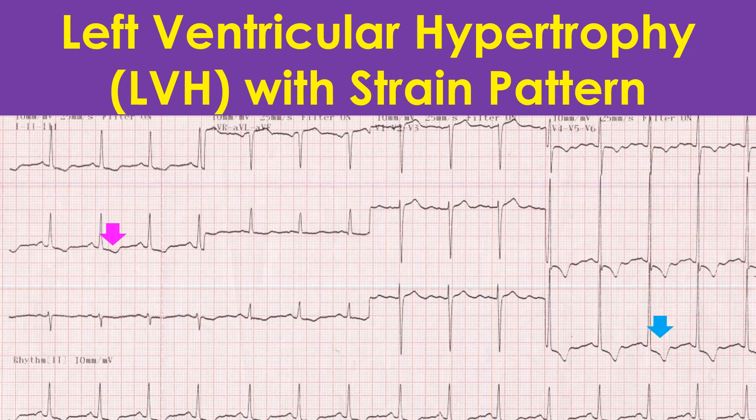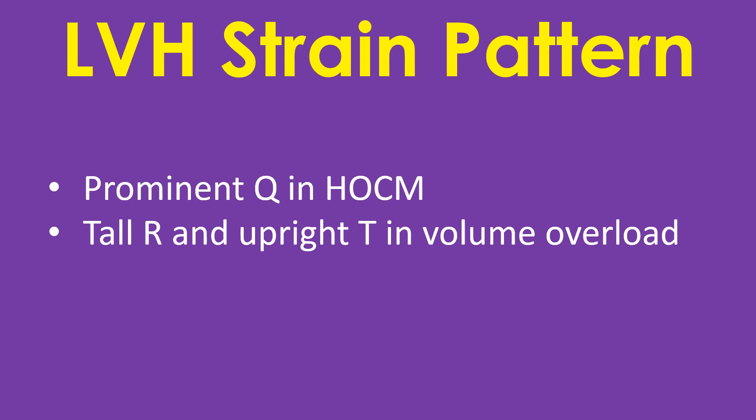This is a pressure overload pattern, which can be seen also in severe systemic hypertension and hypertrophic obstructive cardiomyopathy. In hypertrophic obstructive cardiomyopathy, there may be associated prominent Q waves due to septal hypertrophy.